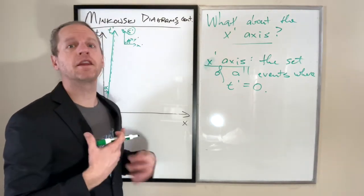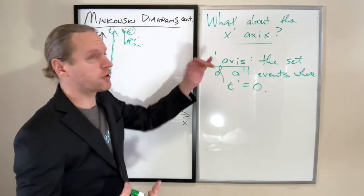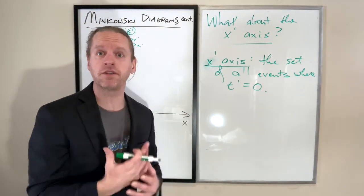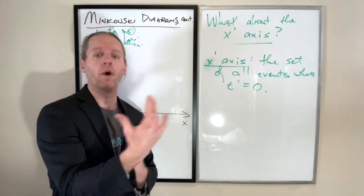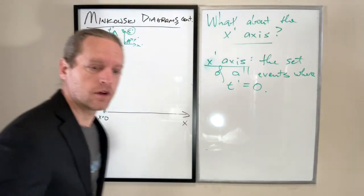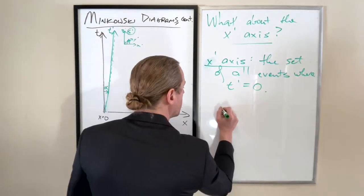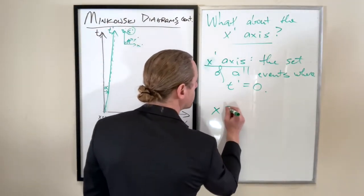All we're going to do is take the Lorentz transformations and set t-prime equal to zero and see where the set of x-primes and t-primes come out.